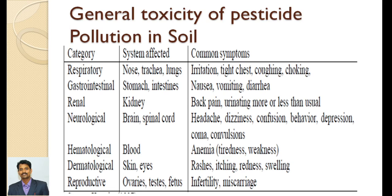Apart from heavy metal pollution in soil, pesticides contribute a wide variety of health effects on humans. Pesticides applied in agriculture fields are organic pollutants that cause respiratory problems — symptoms include nausea, trachea, and lung issues — followed by gastrointestinal problems with stomach and intestinal symptoms, kidney damage, neurological problems, hematological and dermatological issues, and also reproductive problems. Pesticides also contribute very dangerous impacts on humans as well as the environment.